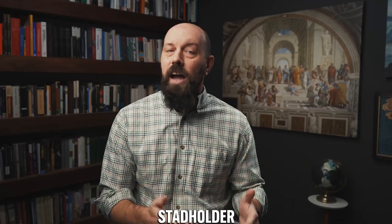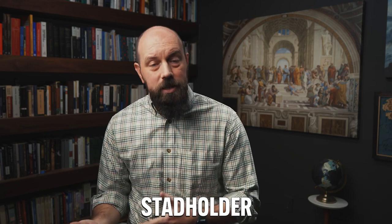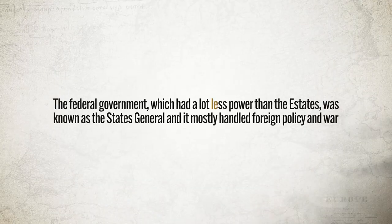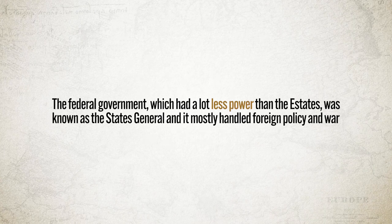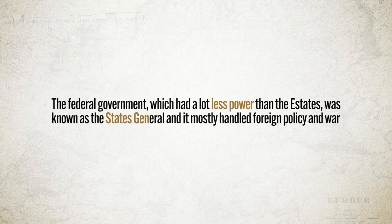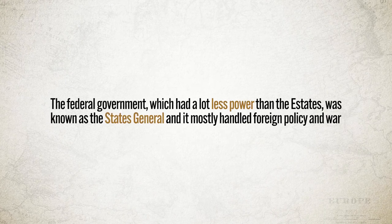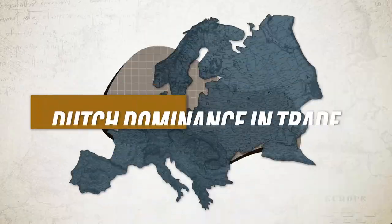Furthermore, each estate appointed a stadtholder who performed ceremonial duties and was responsible for military defense. The federal government, which had a lot less power than the estates, was known as the States General, and it mostly handled foreign policy and war. And because it had so little power, every major issue had to be referred back to the provincial government, all of which had veto power.